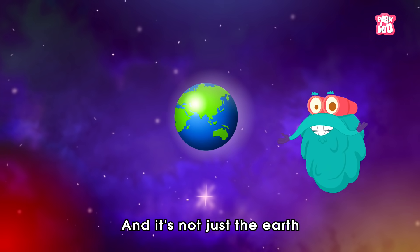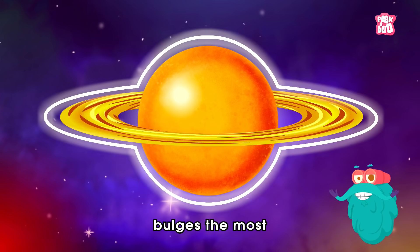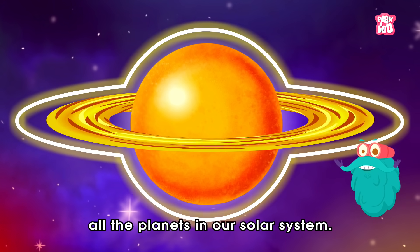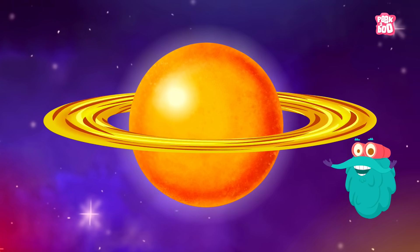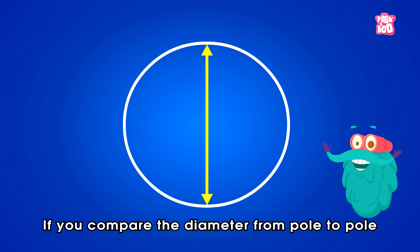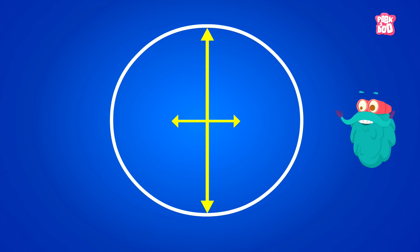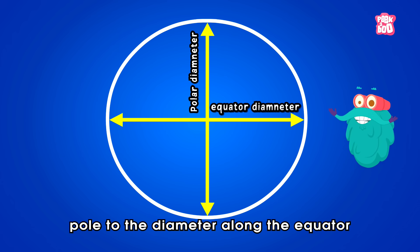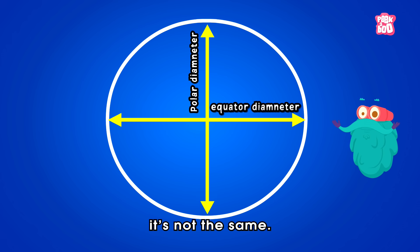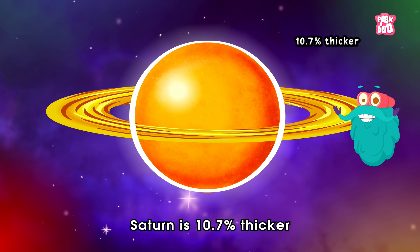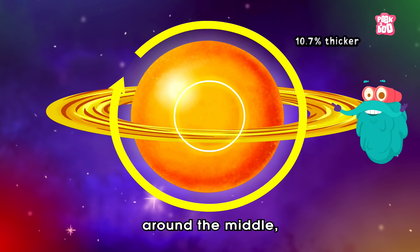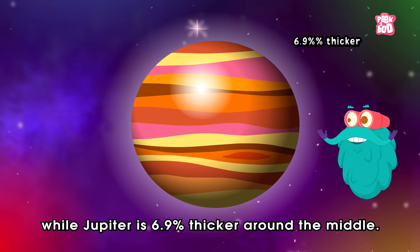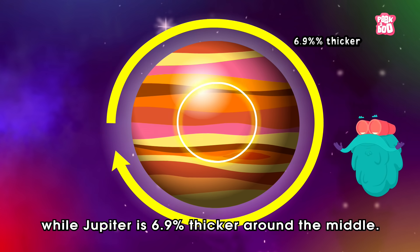And it's not just the Earth, but Saturn bulges the most of all the planets in our solar system. Yes, if you compare the diameter from pole to pole to the diameter along the equator, it's not the same. Saturn is 10.7% thicker around the middle, while Jupiter is 6.9% thicker around the middle.